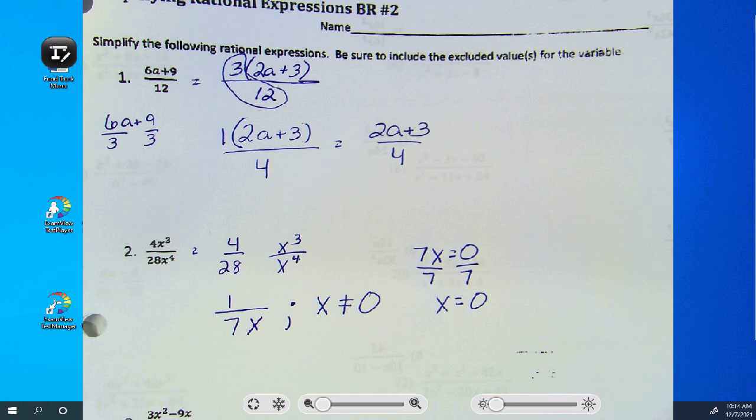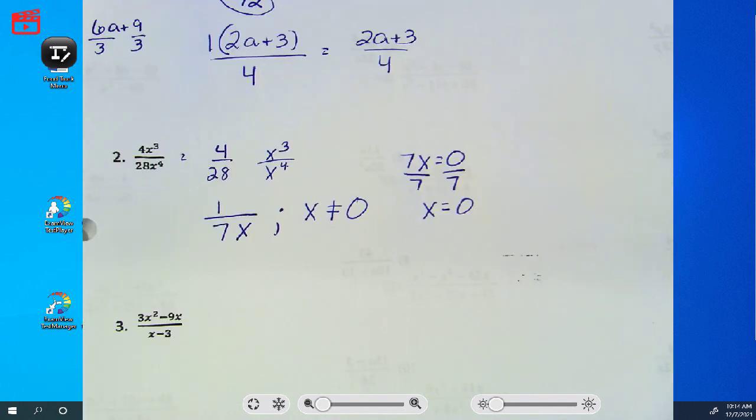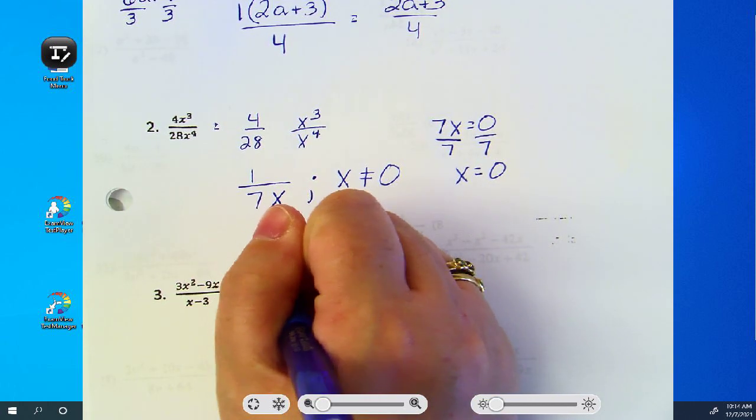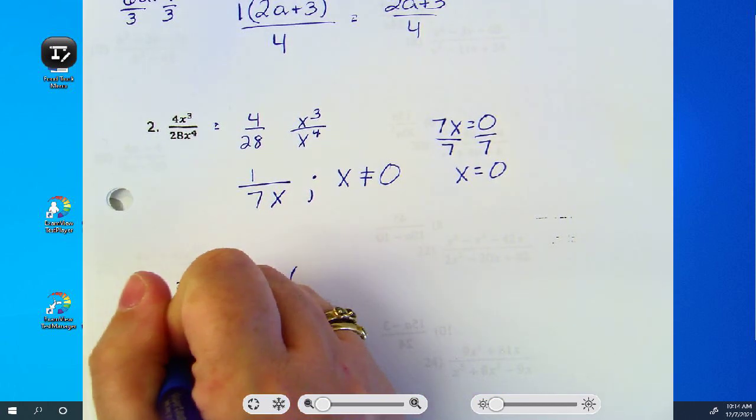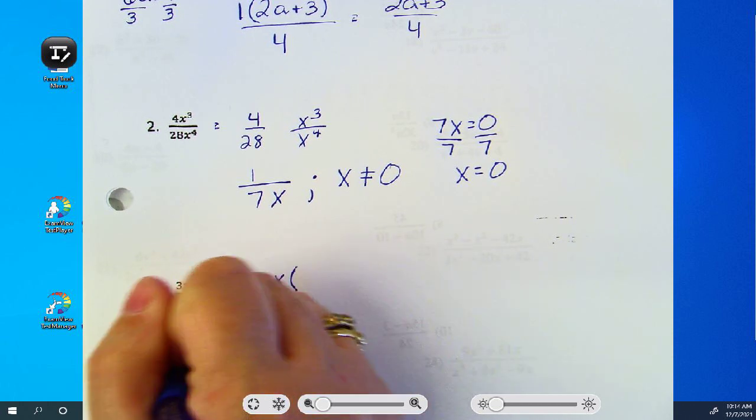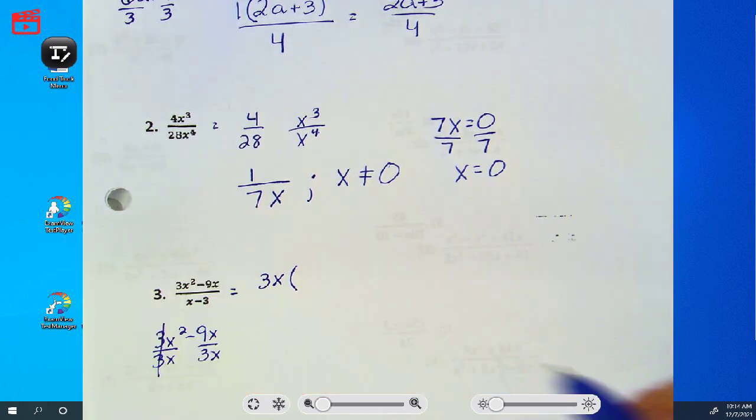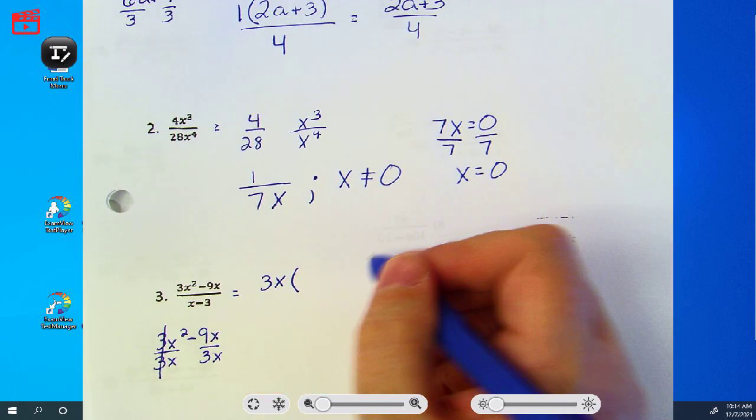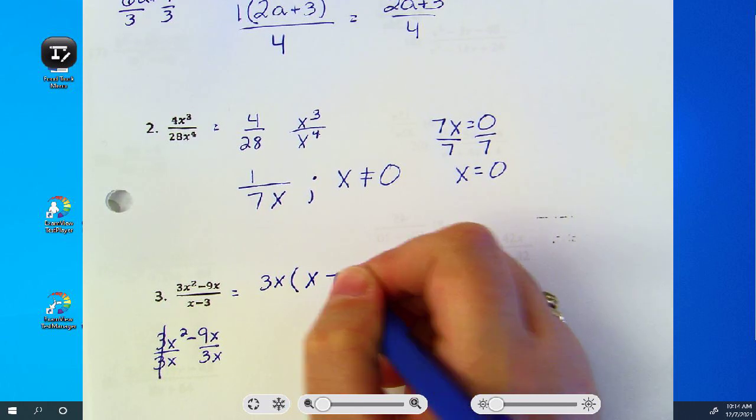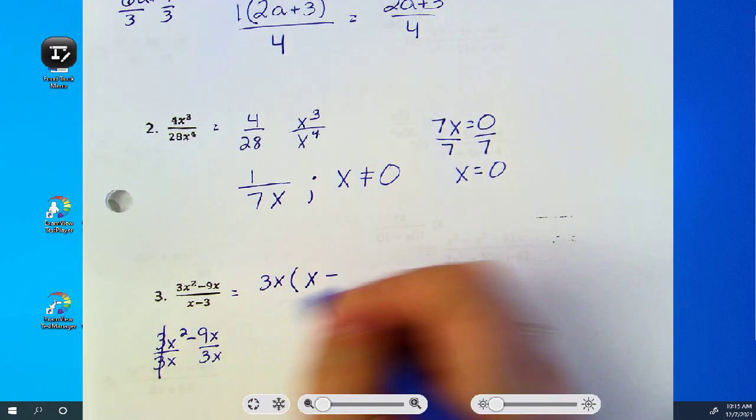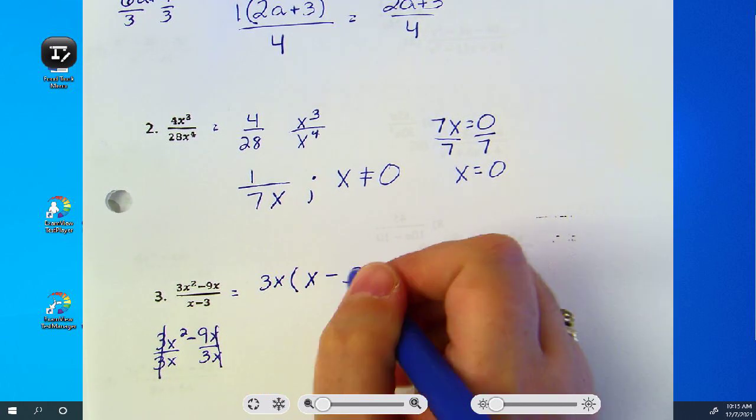Number three. What are we going to do, Kelsey? Three x is the GCF in the numerator. When you divide it out, three divided by three is one, two minus one is x. Nine divided by three is three, one minus one goes away.